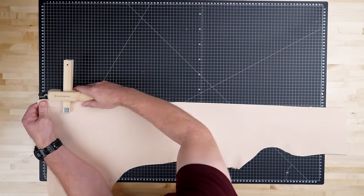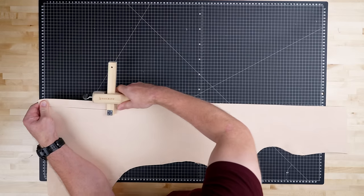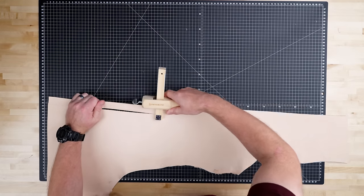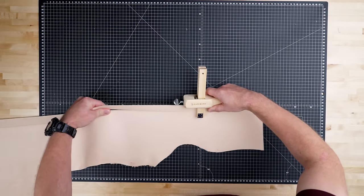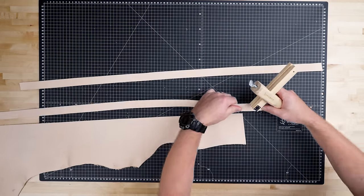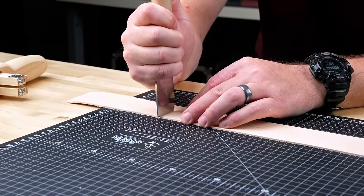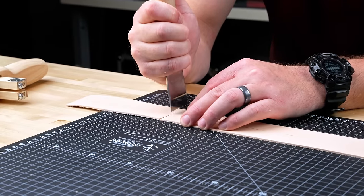To cut these straps, we're gonna be using our Sailrite strap cutter. We're gonna be cutting these straps one inch wide from our leather side that we previously used. These straps are gonna be 36 inches in length.